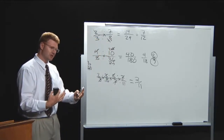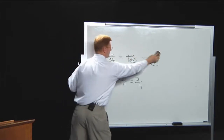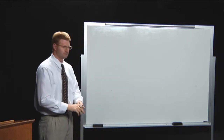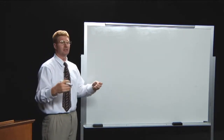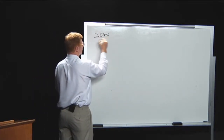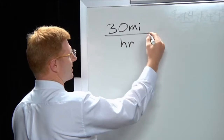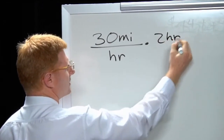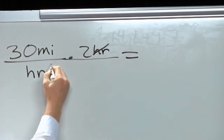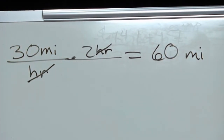One of the best applications for this is unit conversions — we use fractions all the time with units. A common example: if you're traveling at 30 miles per hour on a bicycle and you travel for two hours, you write 30 miles per hour times two hours. The hours cancel, and you end up with 60 miles. Let me do another one to show you how that works.